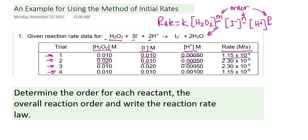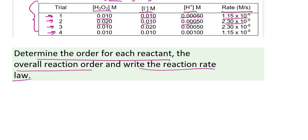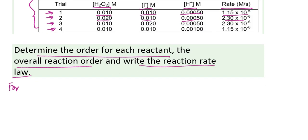You use the change in the rate compared to the change in concentration to figure out the reaction order with respect to each reactant, and then you're able to write the overall rate law and determine the overall reaction order. Let's actually go through how you find each of these reaction orders in detail. Using the data from this table, I'm being asked to find the order of each reactant, the overall reaction order, and then write the reaction rate law. I'll take a stepwise approach, focusing initially on finding the reaction order for hydrogen peroxide first.